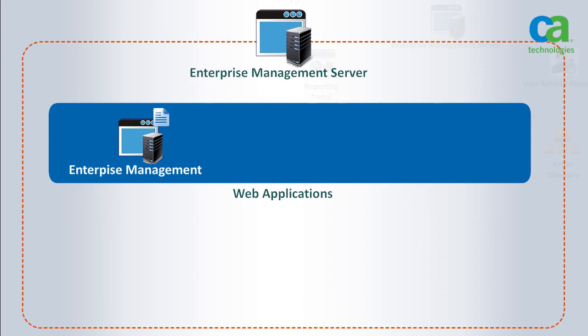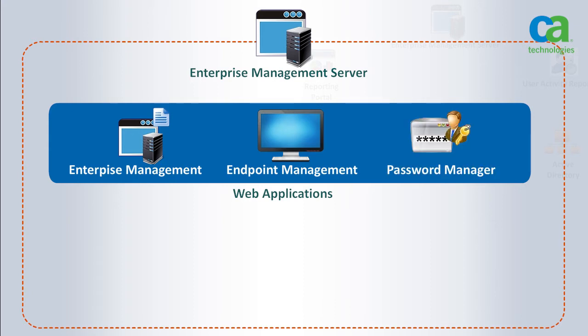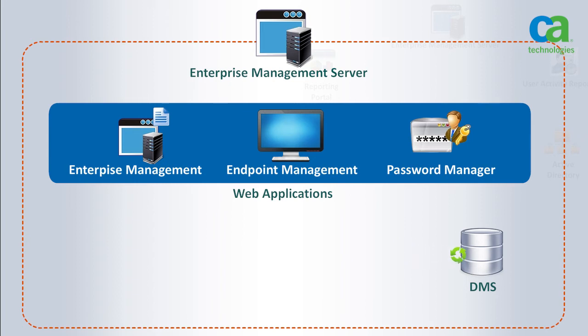Enterprise management enables you to manage all CA Control Minder policies across the enterprise. Endpoint management enables you to administer and configure individual CA Control Minder endpoints. Password manager enables you to manage locally stored CA Control Minder user passwords when not linking to the Active Directory. The second component is the deployment map server, which is the clearinghouse for all policy activity. It houses policies, rule sets, and deployment orders that are distributed to managed endpoints.